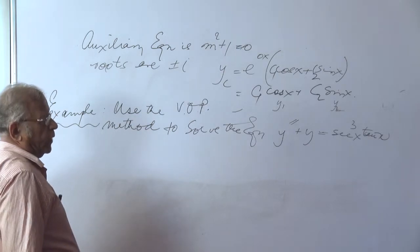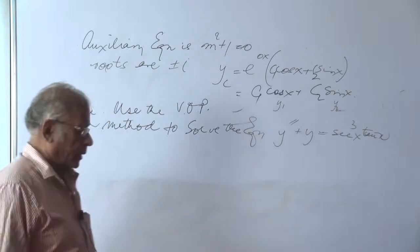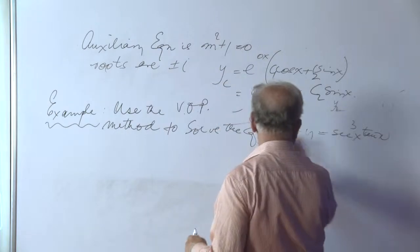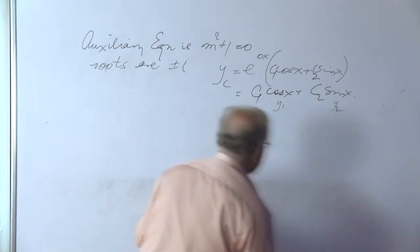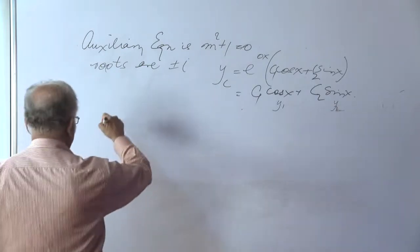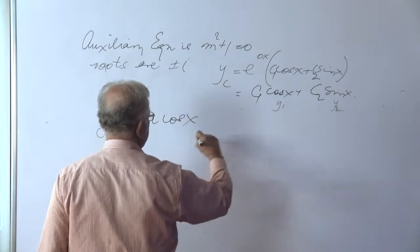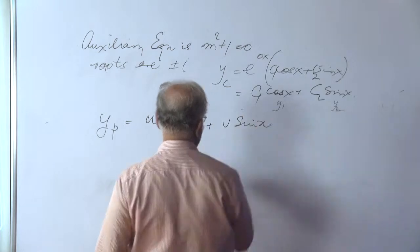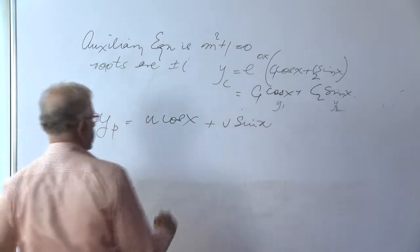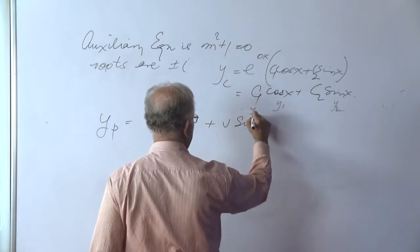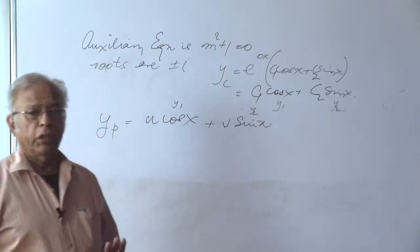Now with this we proceed to find the values of u and v as per the equation that we just rubbed out. We should write again to evaluate u and v. Recalling what we have done a little while ago, the particular solution y sub p can be taken as u cos x plus v sin x. Where u is given, now this again I am writing as y1 and this is y2. There is no harm labeling them so that we don't go wrong in applying the formula so that we can determine u and v accurately.